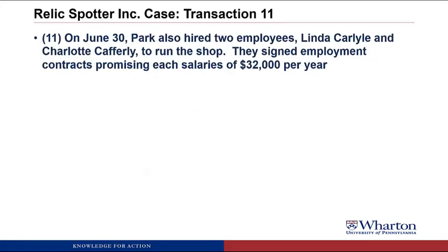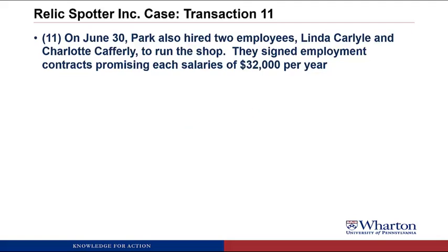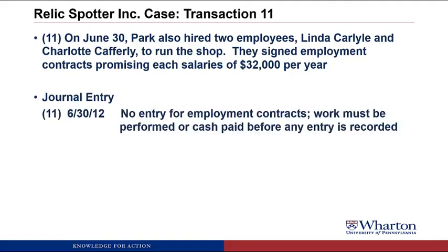Transaction 11. On June 30th, Park hired two employees — Linda Carlisle and Charlotte Cafferly — to run the shop. They signed employment contracts promising each salaries of $32,000 per year. Is there actually a journal entry needed? We haven't paid any cash yet and they haven't done any work for us yet. All that's happened is they've signed a contract — that's the kind of promise we don't account for. So there's going to be no journal entry.